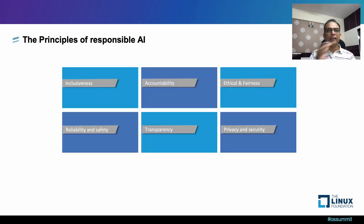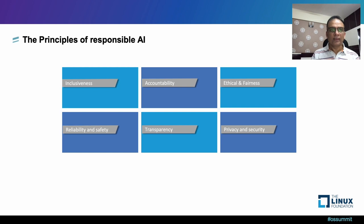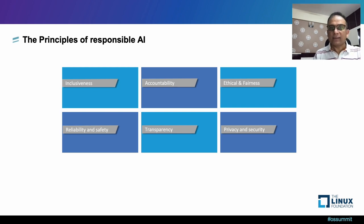Coming to the AI principles, there are six primary principles we are going to discuss: inclusiveness, accountability, ethical and fairness, reliability and safety, transparency, and privacy and security.